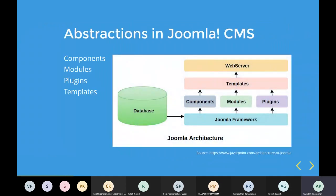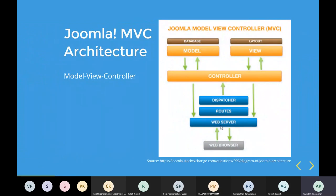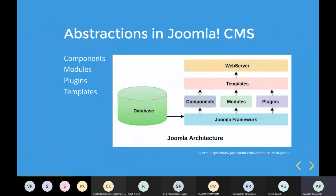Plugins are easy to understand. When a request comes from the web browser, there is a certain flow: data goes to the controller, to the model, back to the controller, to the view, back to the controller, then to the server. Plugins can execute at any point during this process flow depending on context. There are plugins for user authentication, content management, system plugins, and search plugins. The nature of the plugin dictates exactly where it executes.